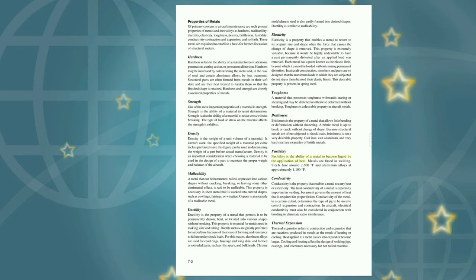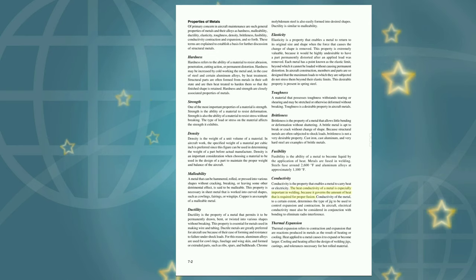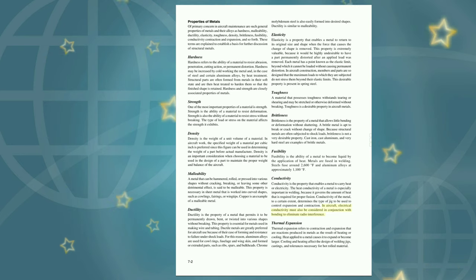Fusibility is the ability of a metal to become liquid by the application of heat. Metals are fused in welding. Steels fuse around 2,600 degrees Fahrenheit and aluminum alloys at approximately 1,100 degrees Fahrenheit. Conductivity is the property that enables a metal to carry heat or electricity. The heat conductivity of a metal is especially important in welding because it governs the amount of heat required for proper fusion. Conductivity of the metal, to a certain extent, determines the type of jig used to control expansion and contraction. In aircraft, electrical conductivity must also be considered in conjunction with bonding to eliminate radio interference. Thermal expansion refers to contraction and expansion that are reactions produced in metals as the result of heating or cooling. Heat applied to a metal causes it to expand or become larger. Cooling and heating affect the design of welding jigs, castings, and tolerances necessary for hot-rolled material.